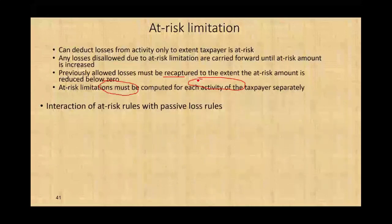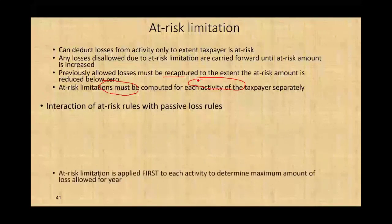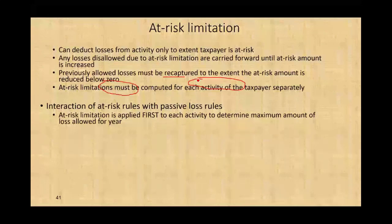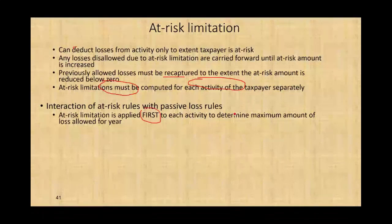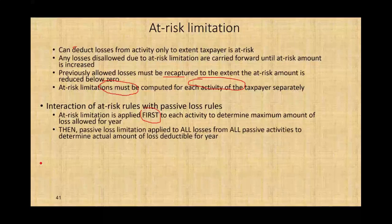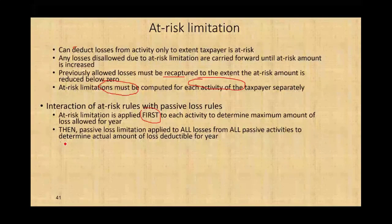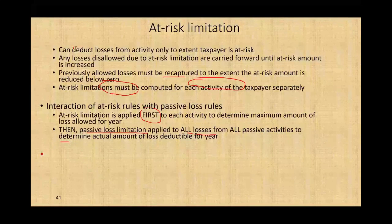The interaction of the at-risk rule with the passive activity loss rules: the at-risk limitation is applied first to each activity to determine the maximum amount of loss allowed for the year. Then, after we determine the at-risk limitation, the passive loss limitation is applied to all losses from all passive activities to determine the actual deductible amount for the year.